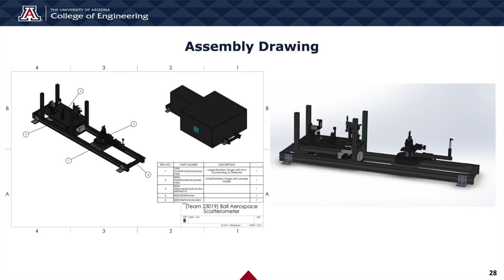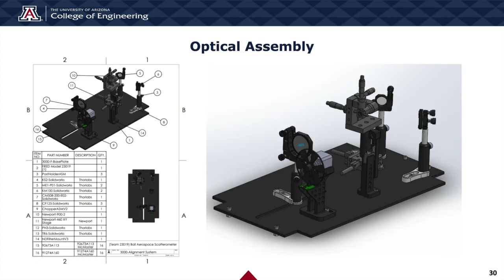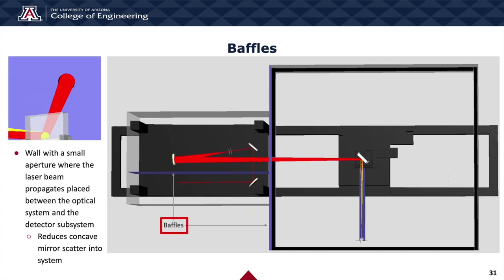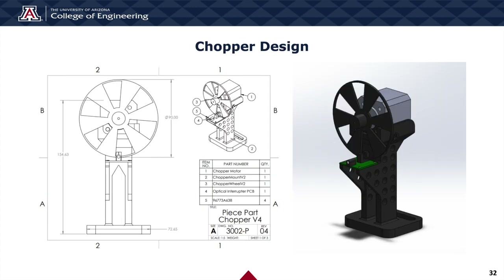Our system is mounted using 80/20 aluminum extrusions, which protrude from the side of the box and act as handles. The structure must be strong enough to hold every component, and stress analysis along with a detailed SolidWorks model informed our decisions. The box is made of black painted wood to isolate the system from external light. A larger box encompasses the detecting subsystem, attached to a smaller box around the optical system. The connecting side acts as a baffle with a small hole where the laser beam propagates. To save money, we designed and 3D printed our own mounting for the chopper and neutral density filter arm. The arm is controlled by a servo motor that moves the neutral density filter into the beam path when the detector is saturated and out when not.